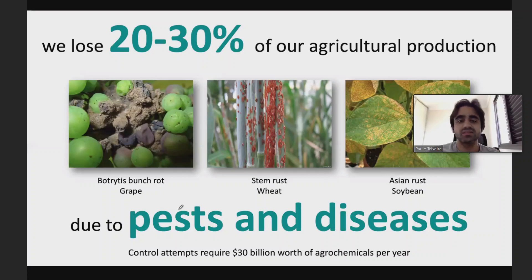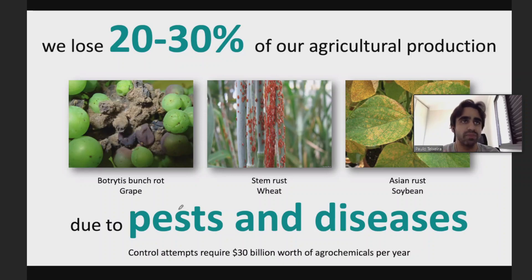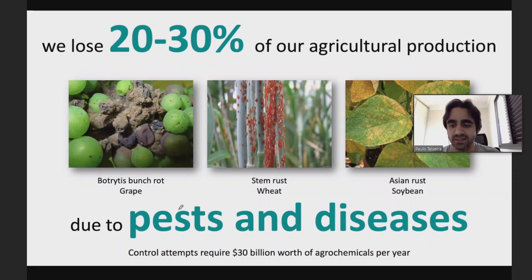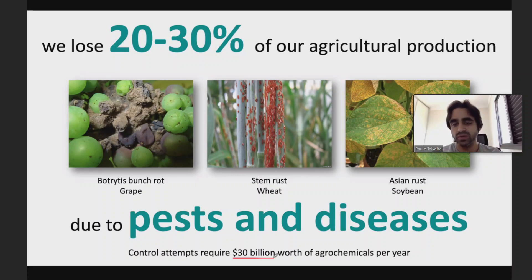Plant diseases are really important — they are among the most important problems we have in agriculture. Every year, we lose about 20–30% of our agricultural production because of pathogens and pests. More than that, we spend a lot of resources trying to control these diseases. It's estimated that we spend about $30 billion in agrochemicals every year to control diseases, and when agrochemicals are not used correctly, they can be bad for the environment.